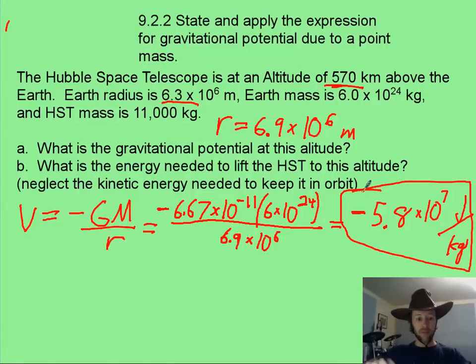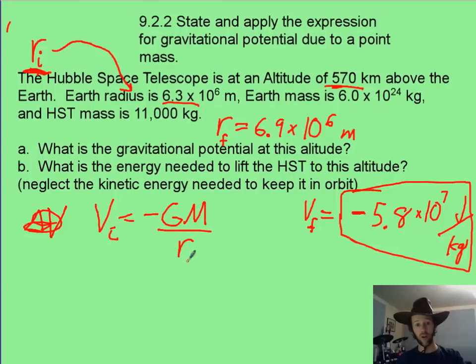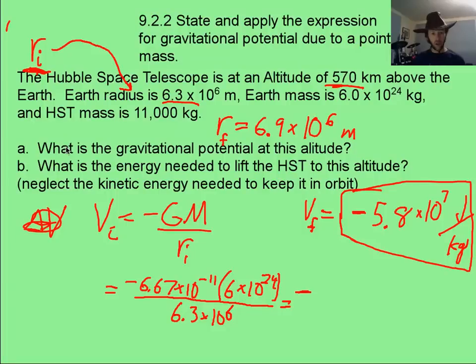Now, let's work on part B. This part B is a little bit trickier than you think, because we don't need to raise it from the center of the Earth up to this point. We just need to go from the surface up to that new altitude. So, what you actually need to know first is, what is the change in gravitational potential from this initial radius, which is the surface, up to this final one? We already know the final potential. So, let's solve for the initial, which is going to be still our same negative GM over our initial.